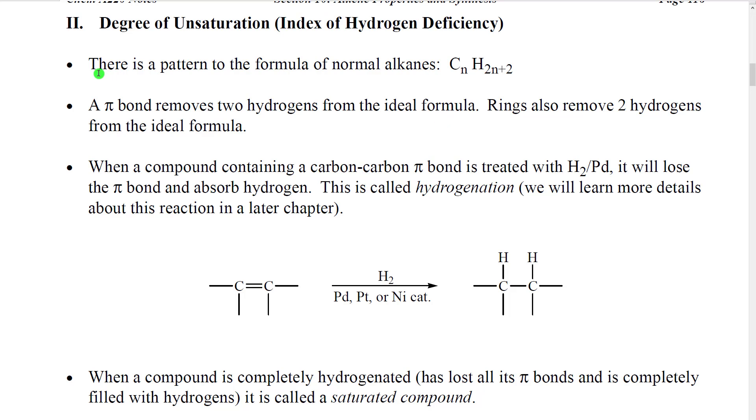The degree of unsaturation is based on an observation that was made about just regular normal non-ring alkanes. That observation is that there's a pattern to the formula of these molecules. If there are n number of carbons in that formula, there will be 2n plus 2 hydrogens in there. So for example, if we think of C2, n is 2, we would have 6 hydrogens if we didn't have a double bond. And that is in fact the case.